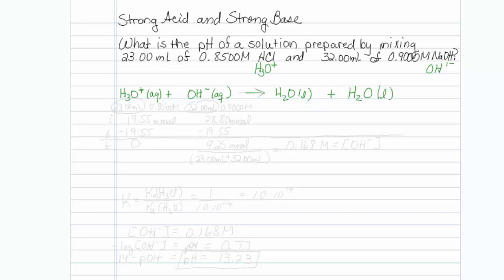Let's look at our amounts now. We have 23 mL and it is 0.8500 molar, and 32 mL and 0.90000 molar.